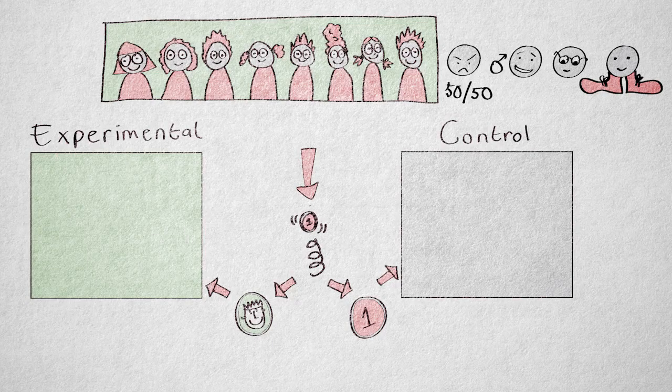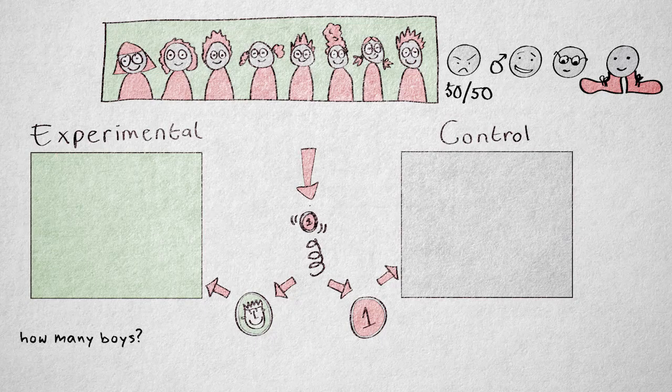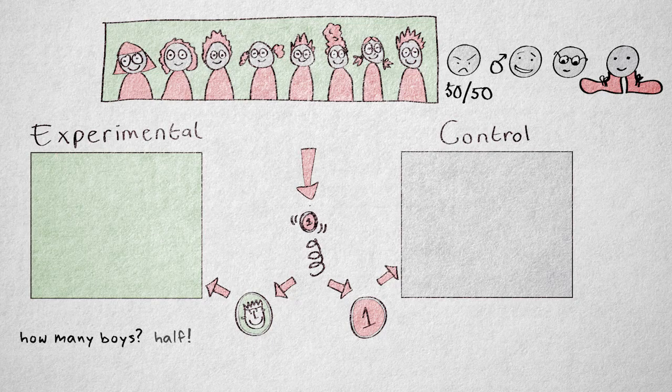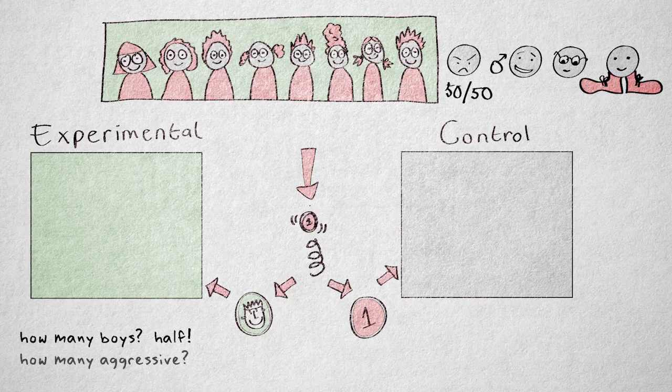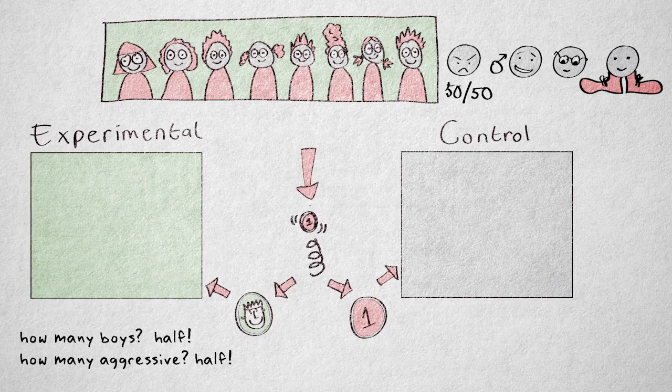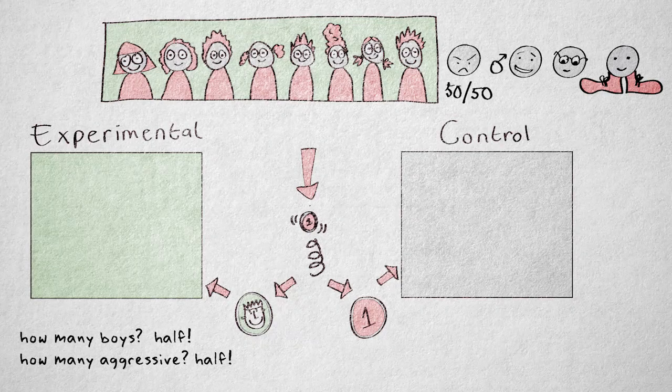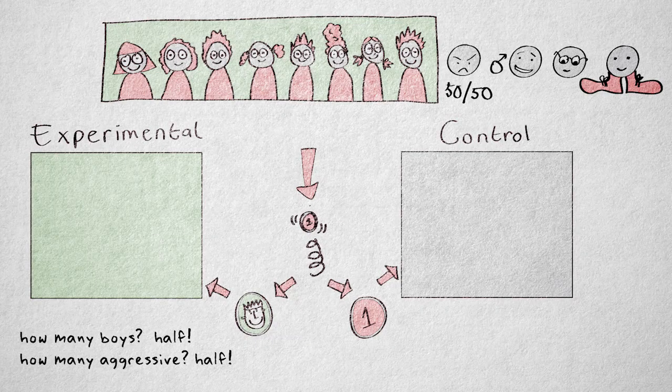Put another way, how many boys do we expect in the experimental condition? About half of all boys in the study, because for the boys, on average, the coin will show heads half of the time. How many naturally aggressive children will end up in the experimental condition? Again, about the same number as in the control condition. And the same goes for all other characteristics we can think of.